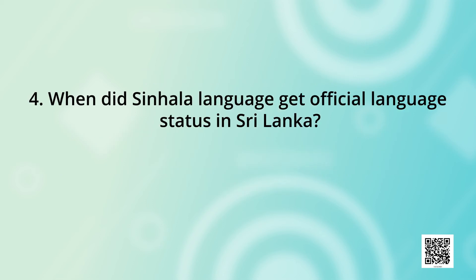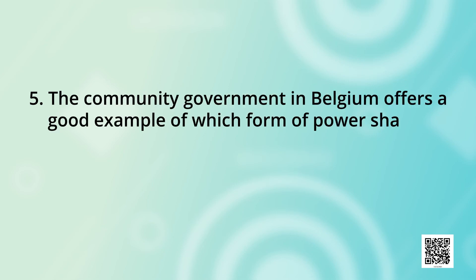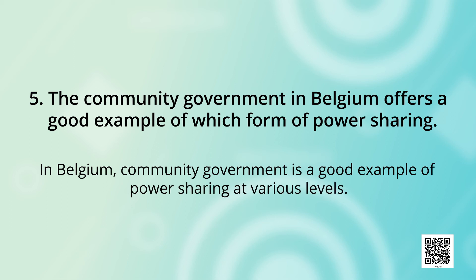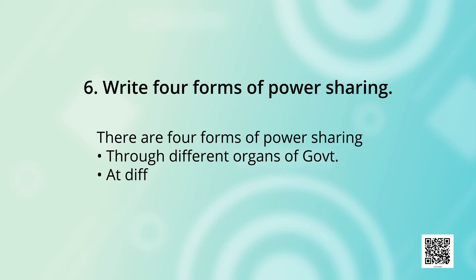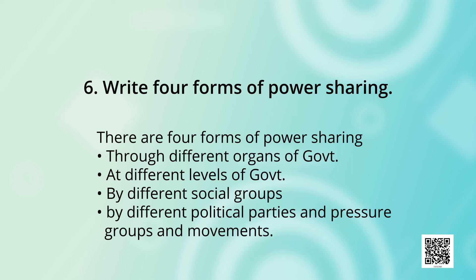Question: When did Sinhalese language get official language status in Sri Lanka? Answer: In 1956. Question: The community government in Belgium offers a good example of which form of power sharing? Answer: In Belgium, community government is a good example of power sharing at various levels. Question: Write four forms of power sharing. Answer: Through different organs of government, at different levels of government, by different social groups, and by different political parties, pressure groups, and movements.